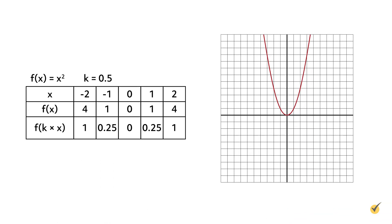A function stretches horizontally when the x value is multiplied by a constant k using the formula f(k times x), where k must be greater than 0 but less than 1. Let's stretch f(x) equals x squared horizontally by the constant k equals 0.5. The original function is graphed in red. The graph of f(x) equals 0.5x squared, which stretches the function horizontally by a factor of 2, is shown in green. Multiplying the x value inside parentheses by a value greater than 0 but less than 1 stretches the graph horizontally.